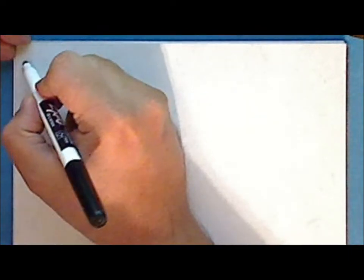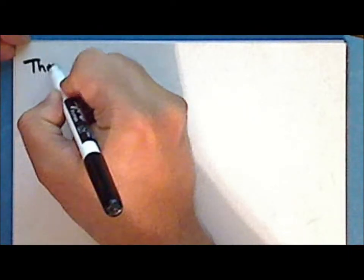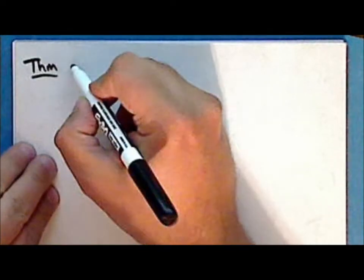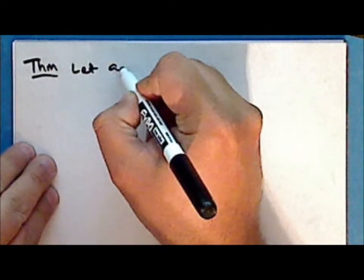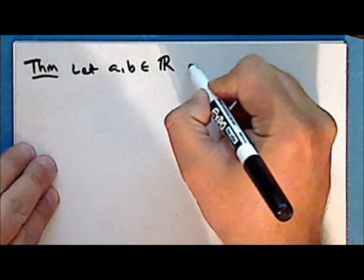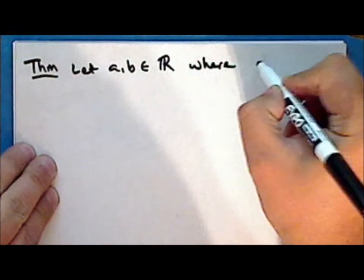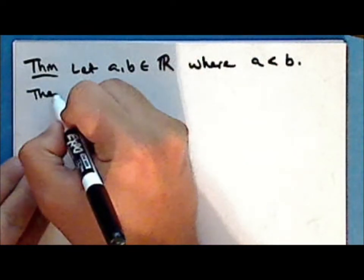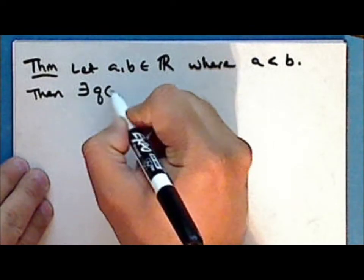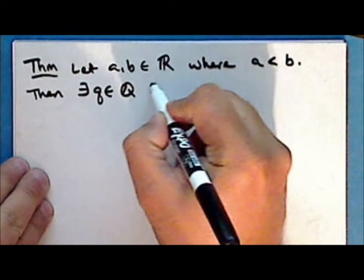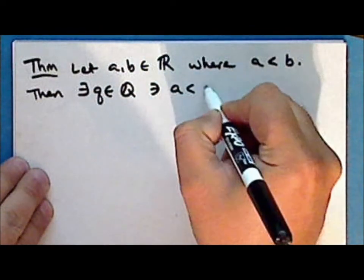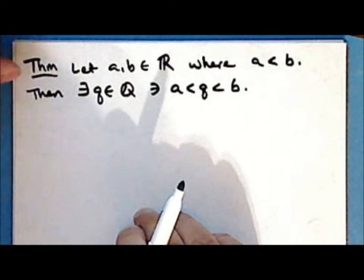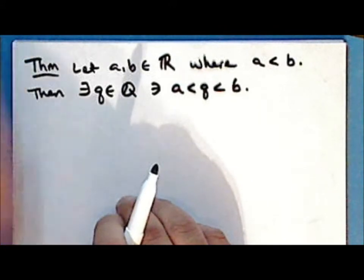Next we will prove a very important theorem that we will use repeatedly. So let A and B be two real numbers where A is less than B. Then there exists a rational number Q such that A is less than Q, which is less than B. That is, between any two real numbers, there is a rational number.